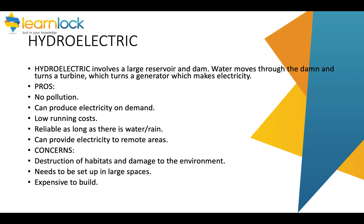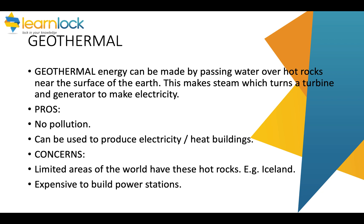Hydroelectric involves a large reservoir and a dam; water moves through the dam, turning a turbine which turns a generator to make electricity. There's no pollution and it can produce electricity on demand — you store the water and release it when needed. It's reliable as long as there's water, so it can't be used in countries with drought, but it can supply electricity to remote areas. Concerns are habitat destruction, the large area of land required, and high construction cost.